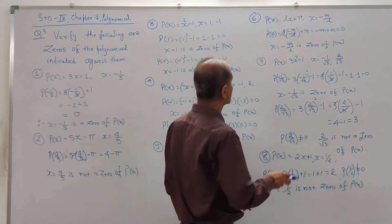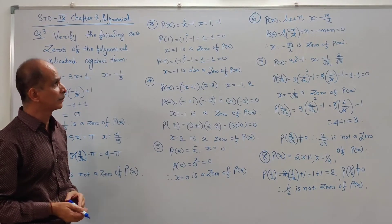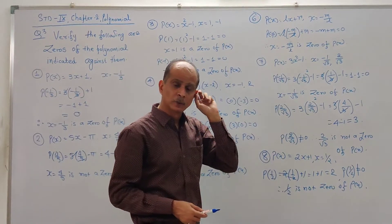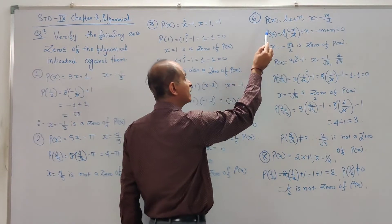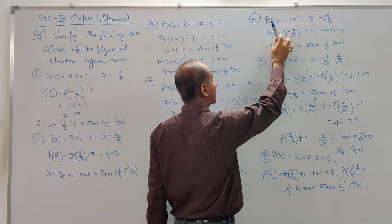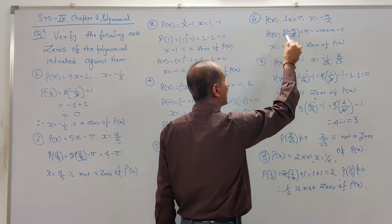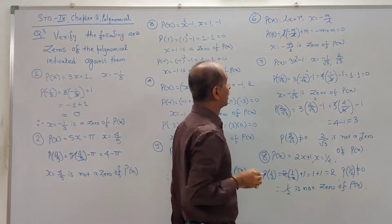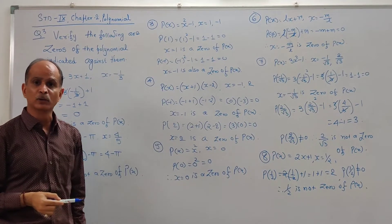Now example number 6: P(x) = Lx + M. The value of x given is -M/L. So in place of x write -M/L: P(-M/L) = L × (-M/L) + M. L cancels, giving -M + M = 0. That's why x = -M/L is a zero of the polynomial.